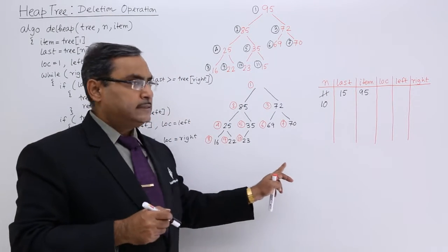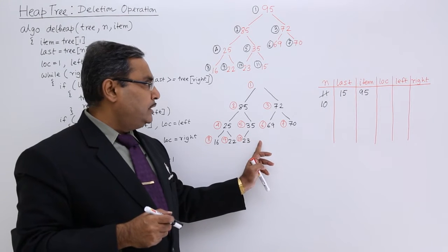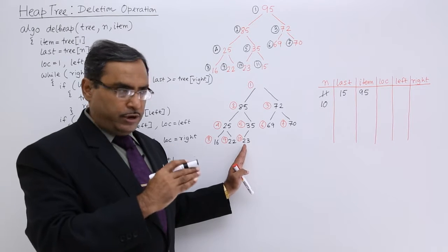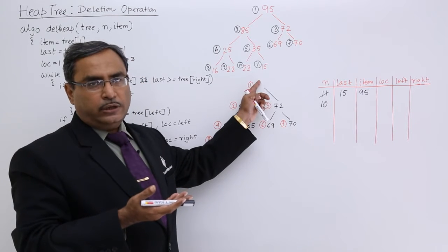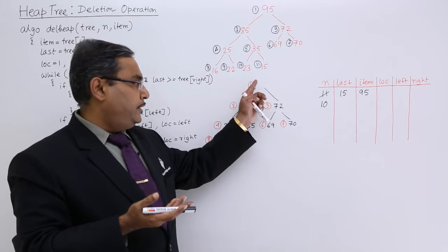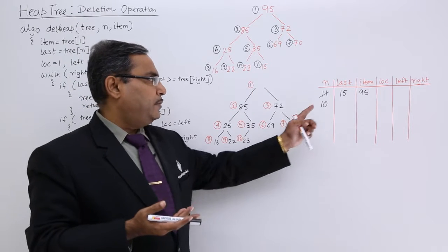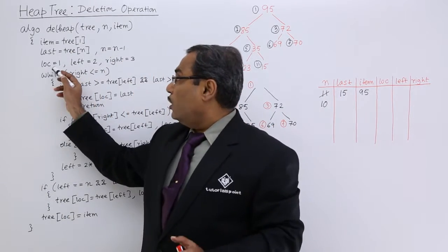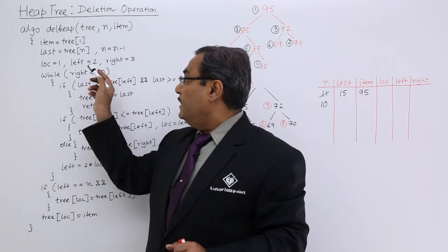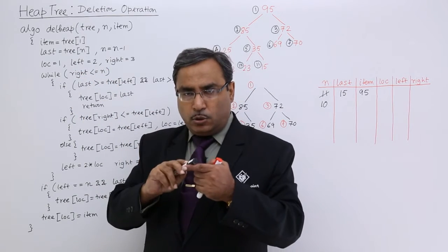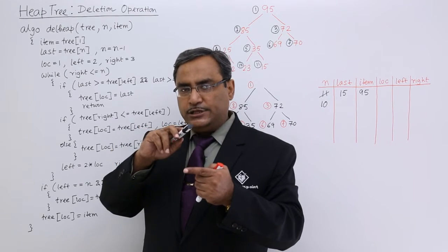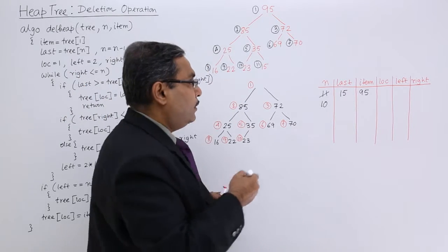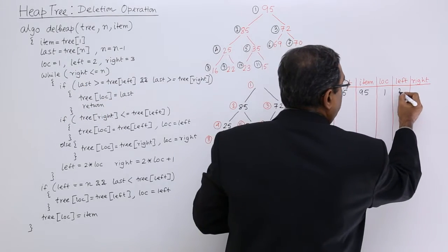So 15 has been kept in last and 95 in item. My tree now has only 10 valid nodes — the 15 is no longer at position 11 since n has become 10. The item (95) has been deleted and 15 is stored in last. For tracing, loc is equal to 1 (the free space). Left is equal to 2, because the kth node has left child at 2*k and right child at 2*k+1. So left = 2*1 = 2 and right = 2*1+1 = 3.